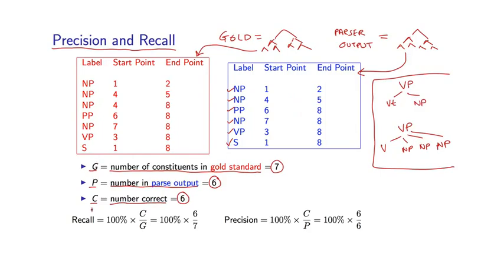Okay, so we've calculated these three numbers, G, P, and C. So, now the recall is defined as 100% times C over G. So, this is basically saying, of the gold standard constituents, how many of them do I recover correctly? In this case, it's 100% times 6 over 7. The precision is 100% times C over P. In this case, 100% times 6 over 6. So, this is saying, of the constituents you recover, what percentage of them are correct? So, in this particular example, 100% of the constituents I recover are actually correct, but I've only recovered 6 out of 7. I think that's around 86% of these gold standard constituents. So we have some errors in terms of recall. We have 100% in terms of precision.